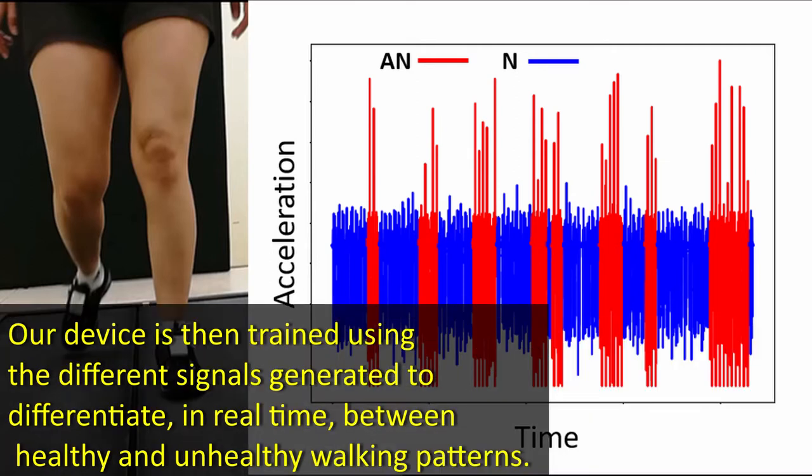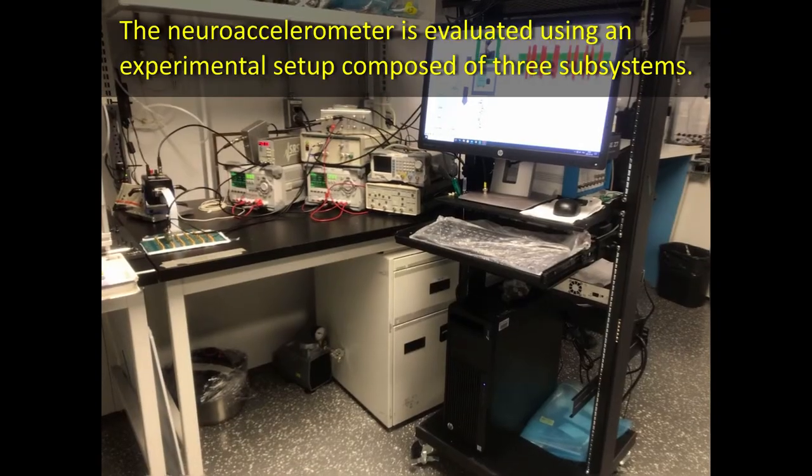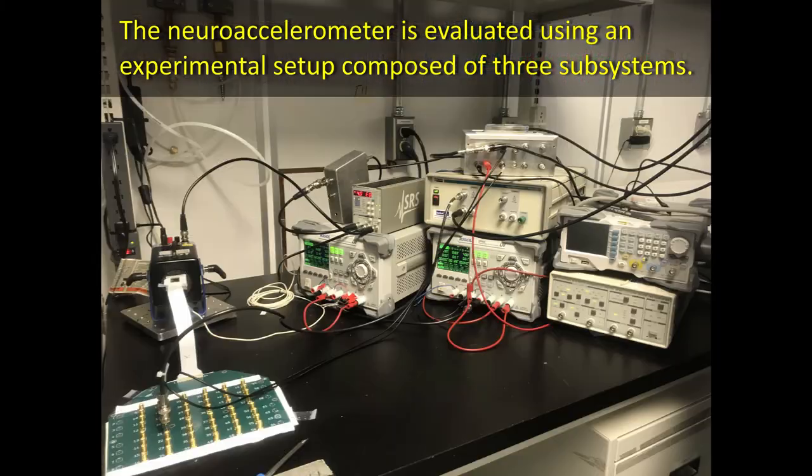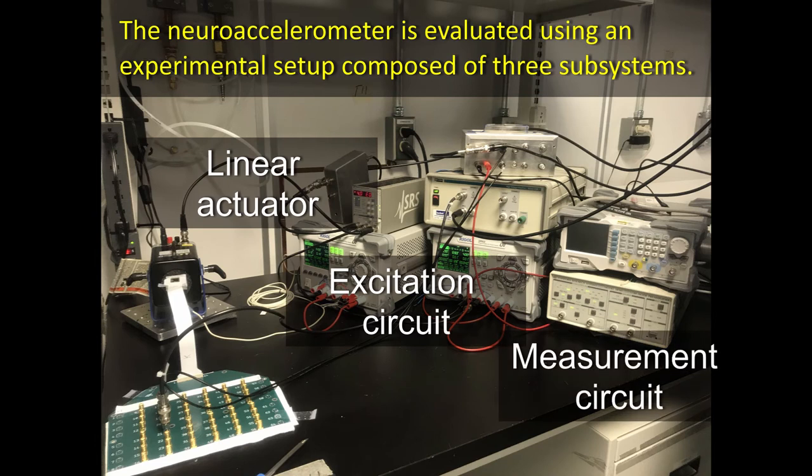Our device is then trained using these mixed signals to differentiate, in real-time, between healthy and unhealthy walking patterns. The neuroaccelerometer is evaluated using an experimental setup of three subsystems: the linear actuator, the excitation circuit, and the measurement circuit.